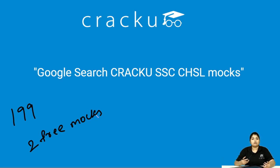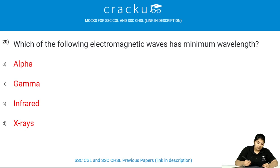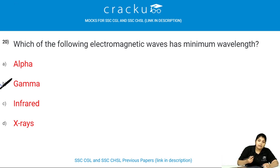Which of the following electromagnetic waves have the minimum wavelength? Gamma rays have the minimum wavelength, which is less than 0.01 nanometers.